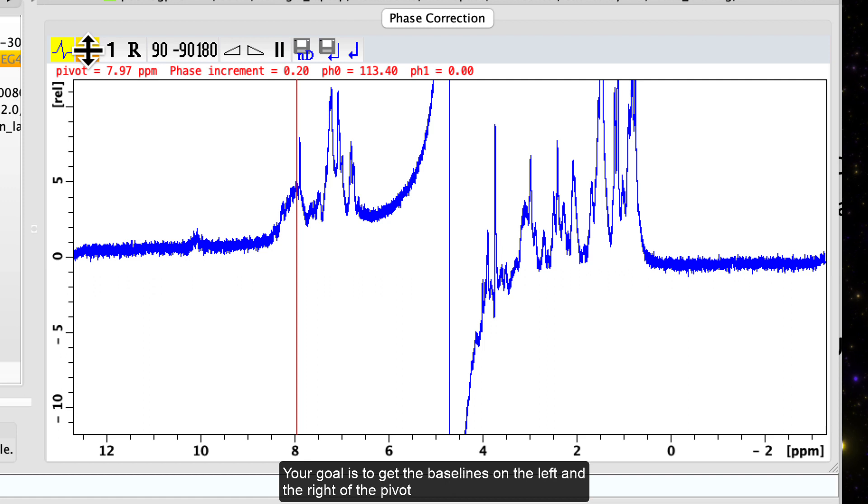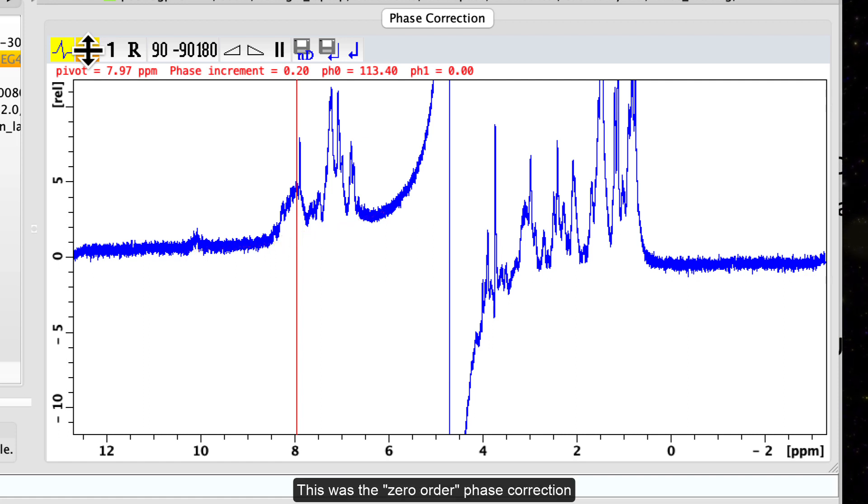You observe effect on phases near the pivot point and ignore the rest of the spectrum. Your goal is to get the baselines on the left and the right of the pivot to look like they want to continue into each other. This was the zero-order phase correction.